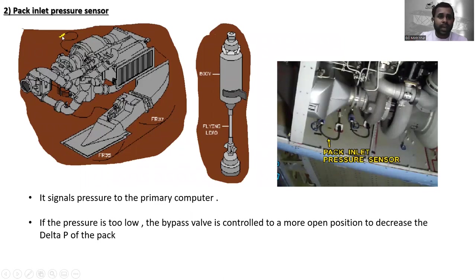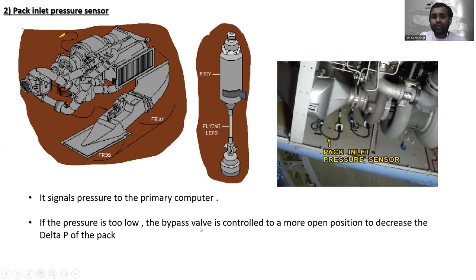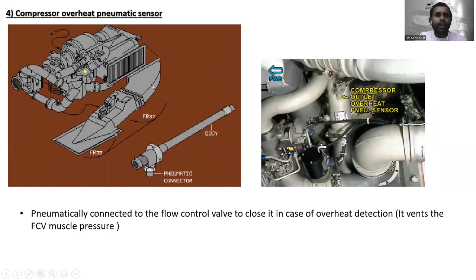The next one is the pack inlet pressure sensor. You can see its location here — this is the body and the fitting. The pack inlet pressure sensor signals pressure to the primary computer. If the pressure is too low, the bypass valve is controlled to a more open position to decrease the delta pressure of the pack.